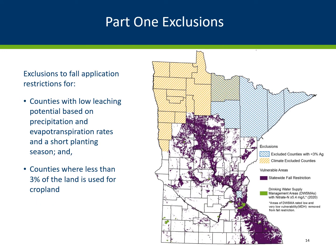Parts of the state are excluded from fall application restrictions. These include counties with low leaching potential based on precipitation and evapotranspiration rates and a short planting season, shown in yellow and mainly covering northwest Minnesota, and counties where less than 3% of the land is used for cropland, shown in blue and generally in northeast Minnesota and Ramsey County.